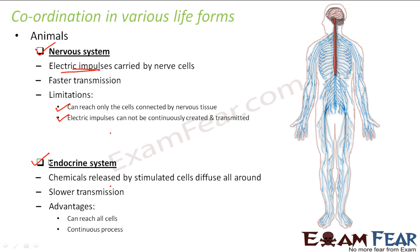The advantage of the endocrine system is that it can reach all cells, because there is no limitation of nervous tissue — all kinds of tissues will be able to recognize the chemicals. It is also a continuous process because there is no time lag involved. Once the chemicals are released, they diffuse around continuously, so there is no time lag in the generation of those chemicals.